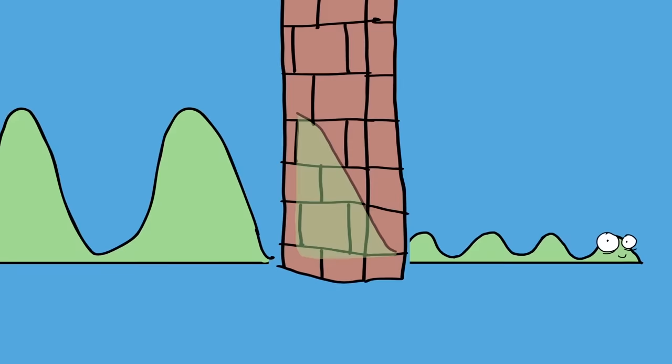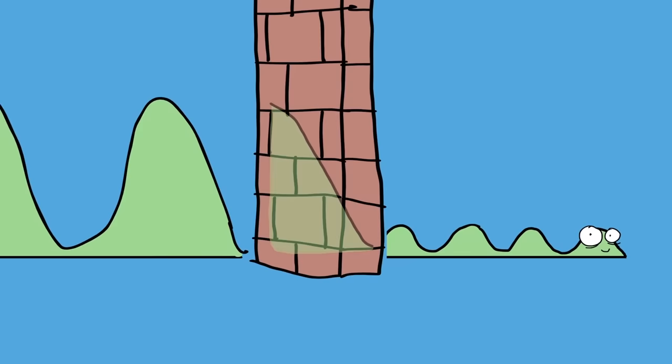So sometimes, even when a quantum particle doesn't have enough energy to jump a barrier, because of its dual wave-like nature, we can still find it on the other side.